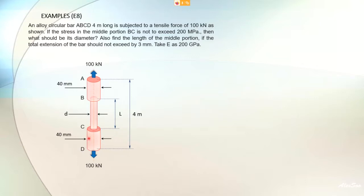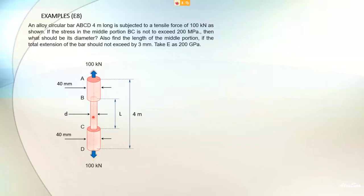Looking at the diagram, both sections AB and CD have a diameter of 40 mm each. However, for section BC, the diameter is not given — we have to find the diameter and the length of this middle portion.